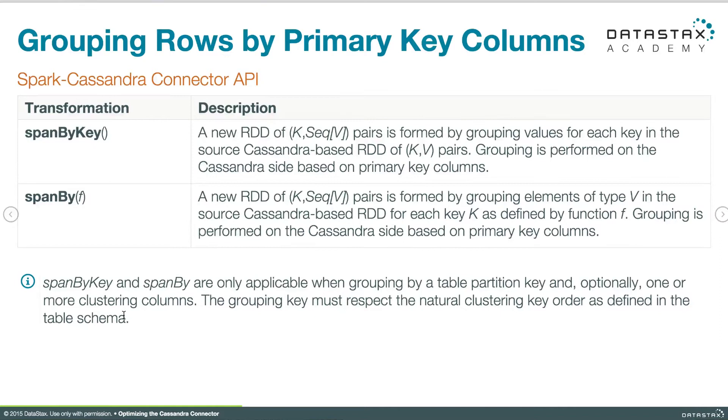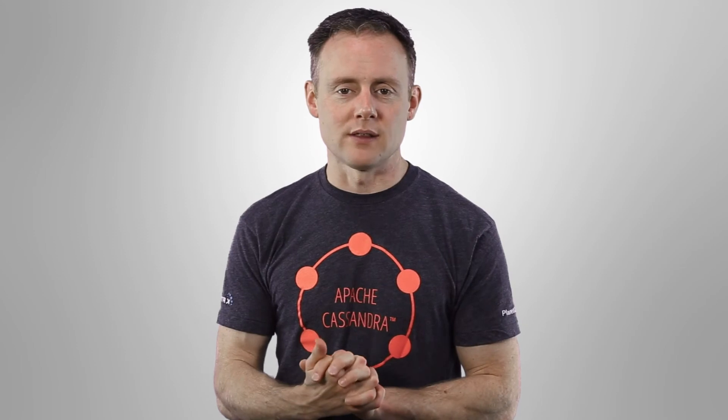For this to work as a Cassandra optimization, we still have to be picking columns that are in the Cassandra key — we don't get to pick from arbitrary columns in the table. But if we don't want the default key structure and want to modify it, still picking from within the partition key and the clustering keys, then span by is what we want. These methods only work as an optimization when grouping by columns that are part of the partition key or clustering keys. If you have to group by arbitrary columns, you can still use group by key, but then it will be Spark doing that in the normal way. When you want to group by Cassandra primary key columns, use the optimized methods and that work gets done in Cassandra rather than in Spark.